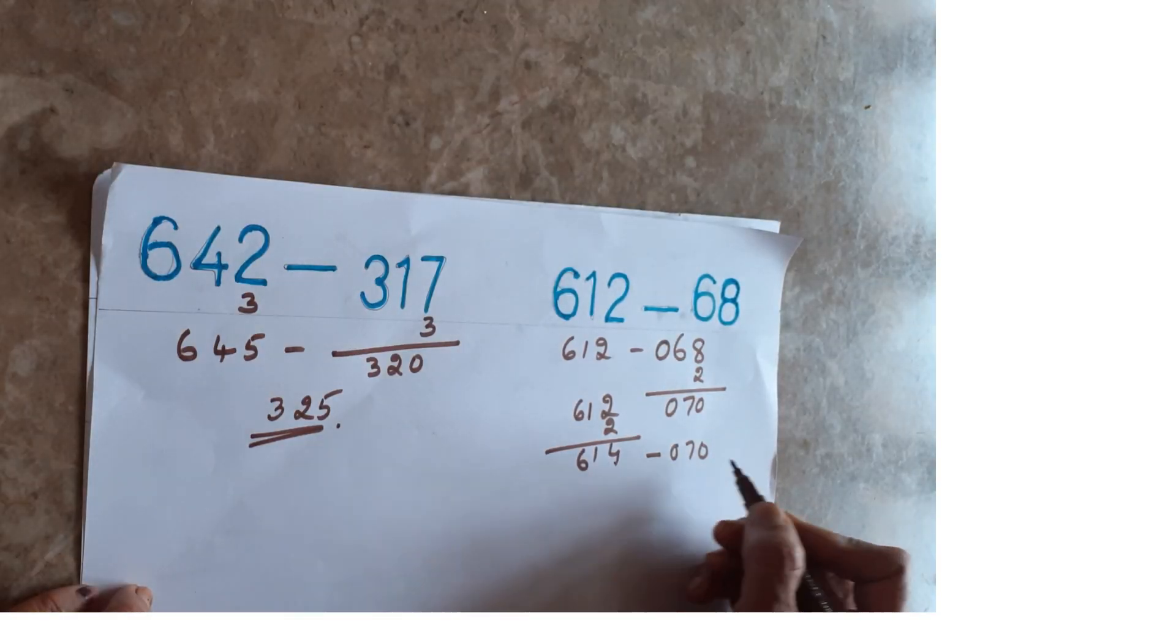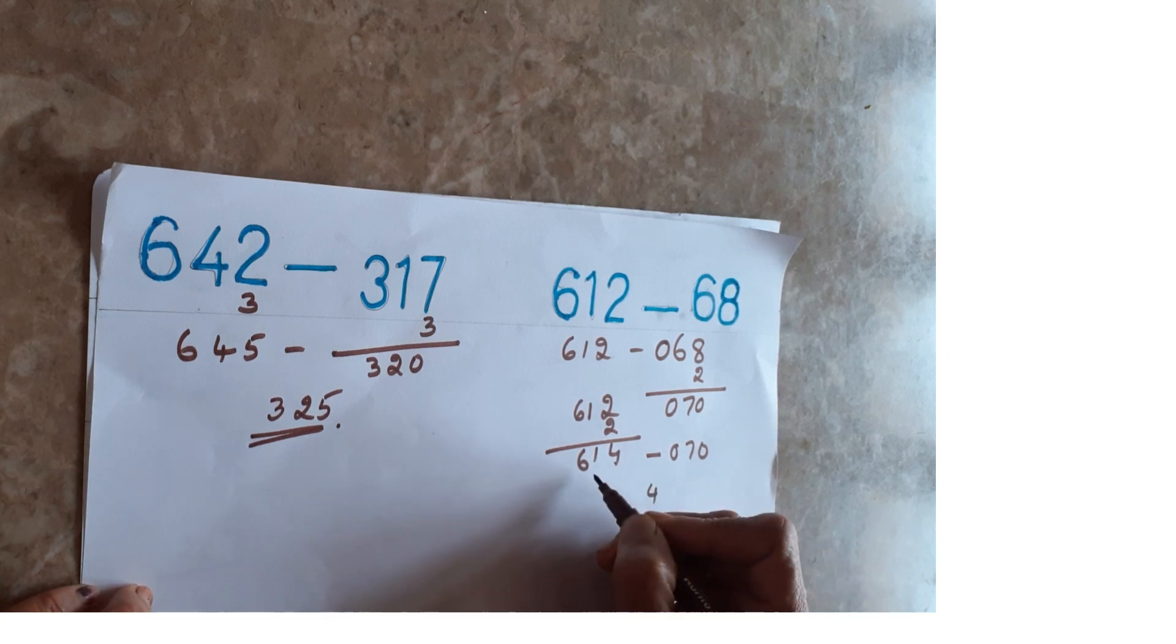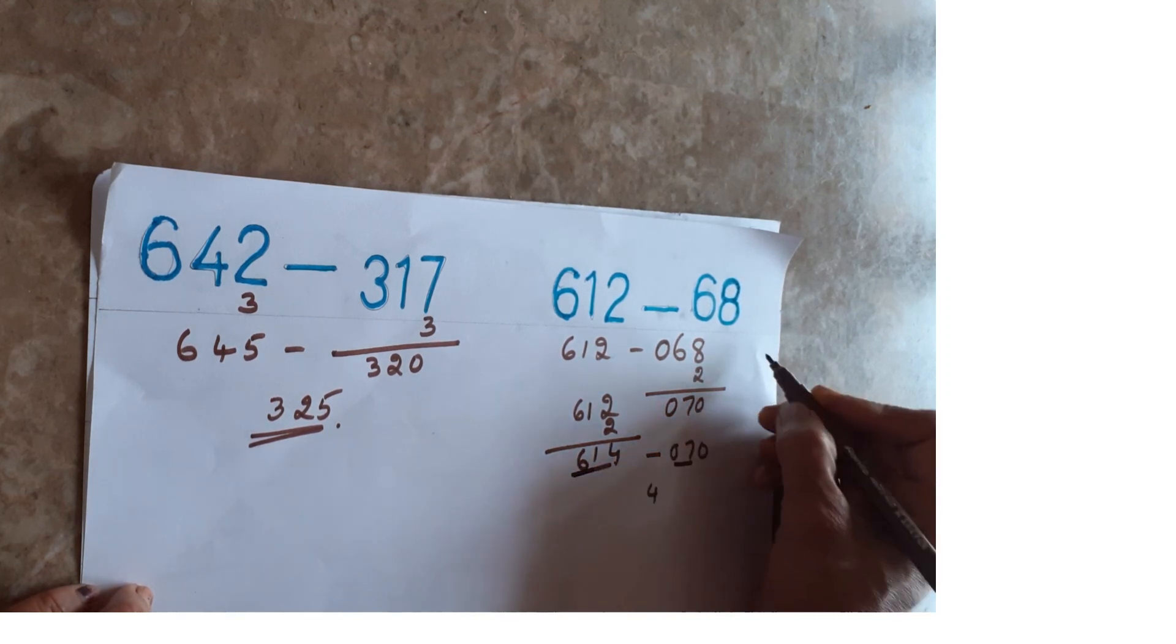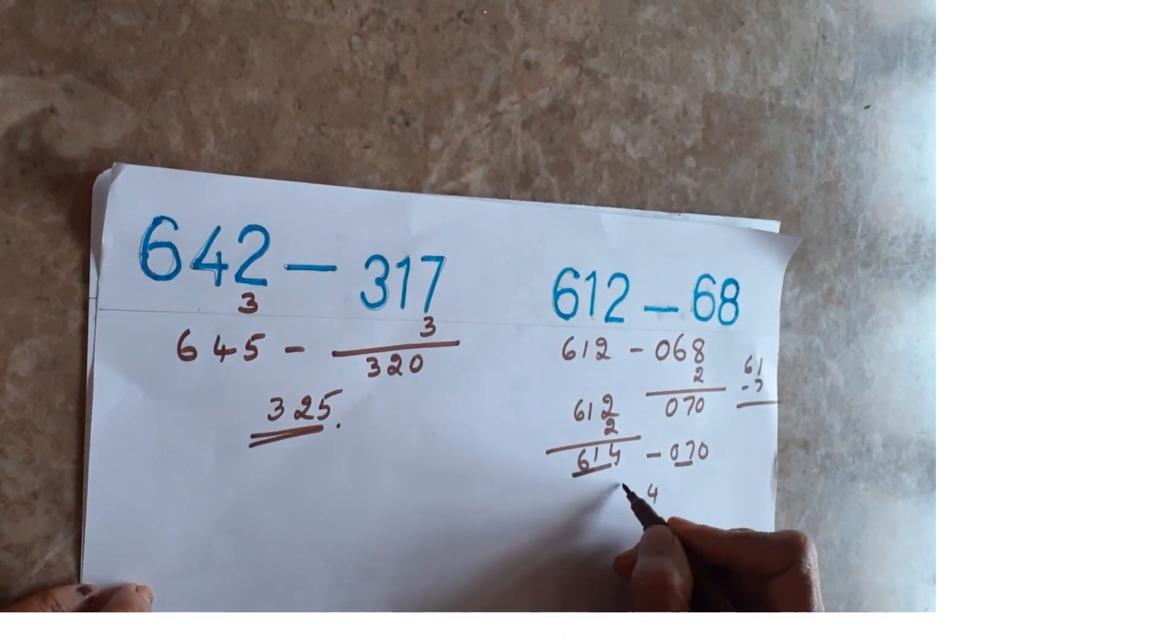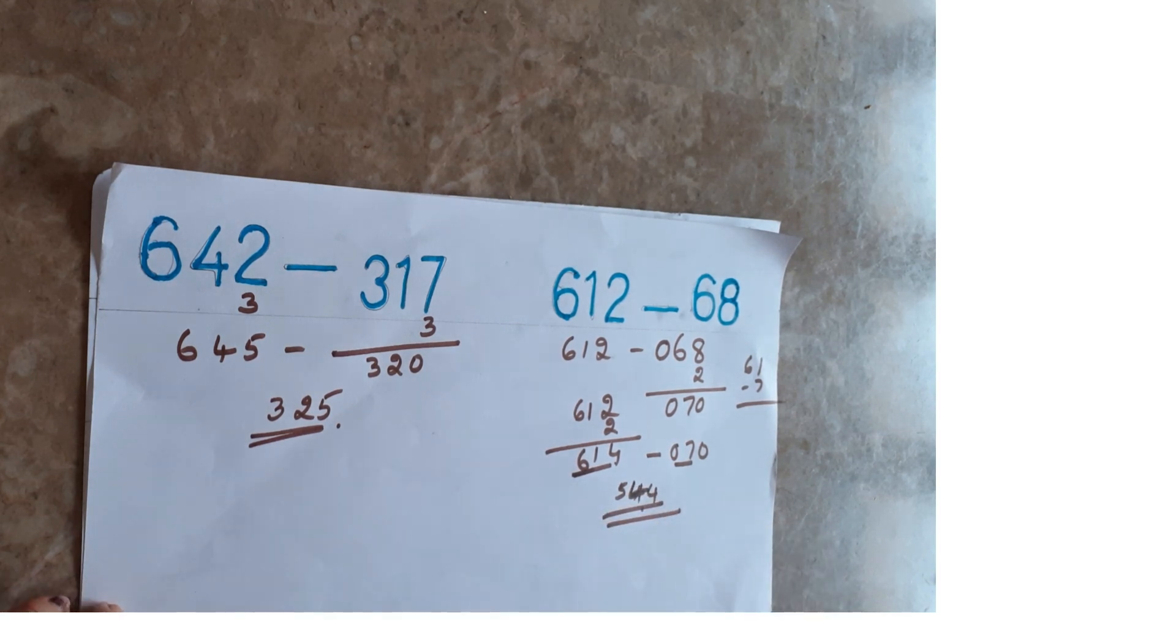Here what you have to do? 4 minus 0 is 4 only. Then take the 2 digits at a time. 61 minus 7 you do. Then you will get 54. This is the way you can do.